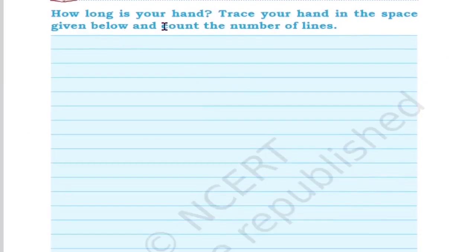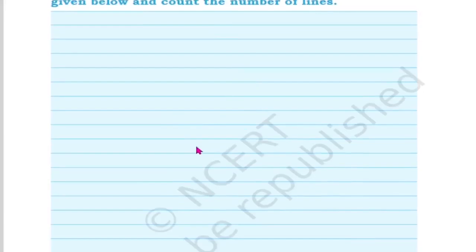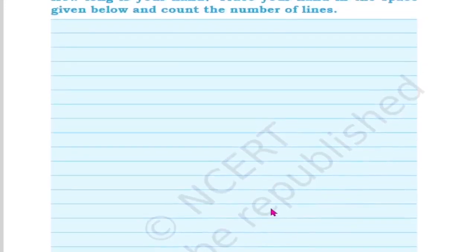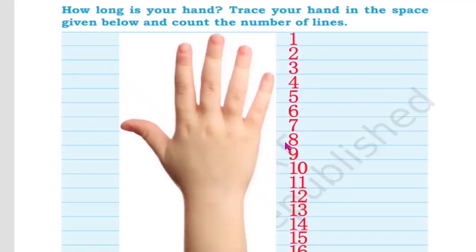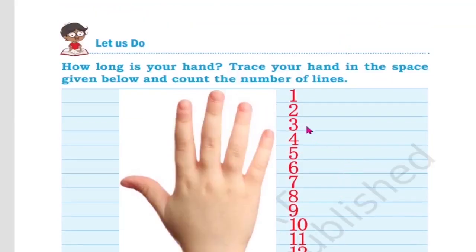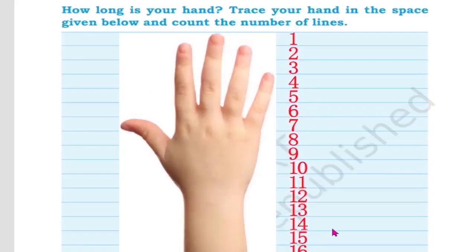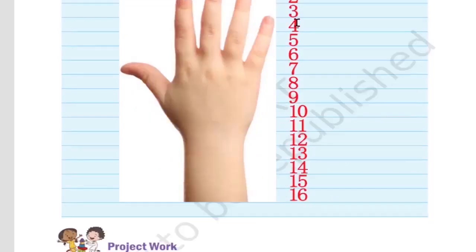Let's do an activity: How long is your hand? Test your hand in the space given below and count the number of lines. Children, here you will trace your hand and count how many lines it covers. The hand shown covers up to 16 lines. You also trace your hand here and count how many lines your hand covers.